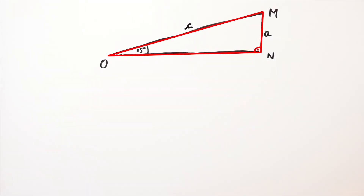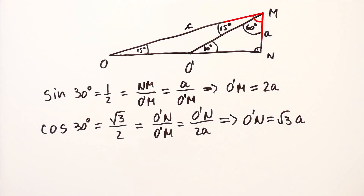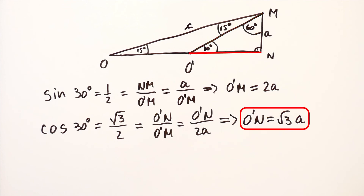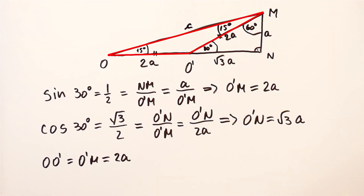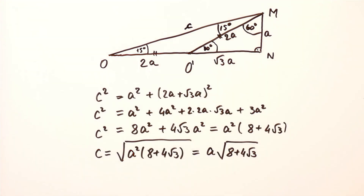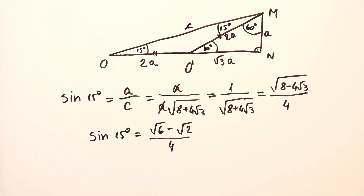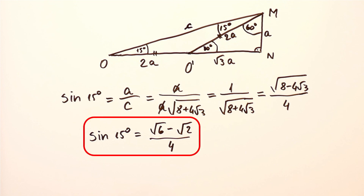We started with the right triangle ONM whose angle at vertex O was 15 degrees. Then we divided the angle at vertex M into two angles: one equal to 15 degrees and the other equal to 60 degrees. That way we got the isosceles triangle OO'M and the right triangle O'NM with the angle of 30 degrees at O'. From the sine and cosine of 30 degrees, we calculated that O'M equals 2A and O'N equals the square root of 3 times A. Since OO'M is an isosceles triangle, OO' is also equal to 2A. After that, we used the Pythagorean theorem to express C in terms of A, and after simplifying we got that the sine of 15 degrees is equal to the square root of 6 minus the square root of 2 over 4.